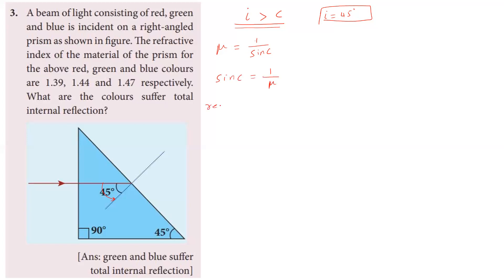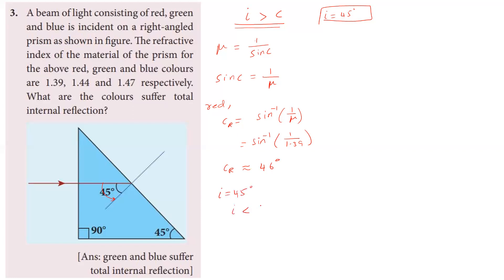Using the formula sin C equals 1 by mu, starting with red light: the critical angle for red equals sin inverse of 1 by 1.39, which is approximately 46 degrees. Since the angle of incidence (45 degrees) is less than the critical angle of 46 degrees, red light does not undergo total internal reflection.